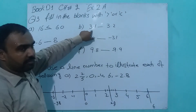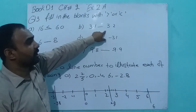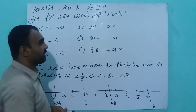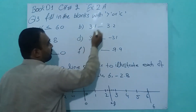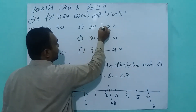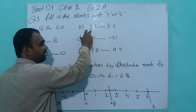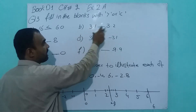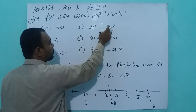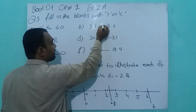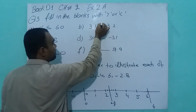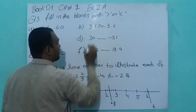3.1 and 3.2 — which is greater and which is smallest? 3.1 is the smallest and 3.2 is greater than, so use this sign.